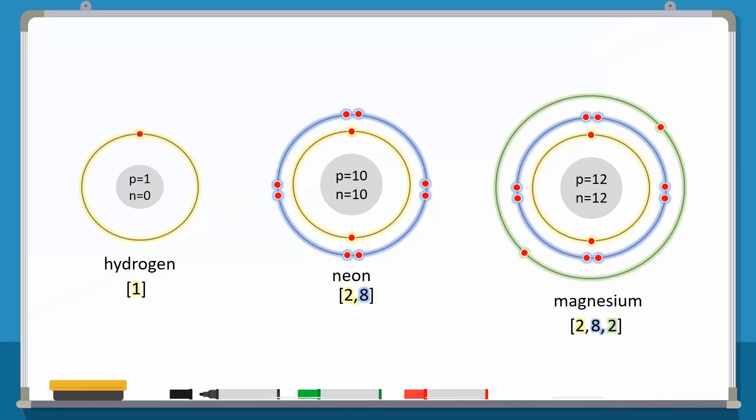This electron is present in the first shell or K shell. Neon has 10 protons and 10 electrons. Using the formula for electronic configuration, the first shell will have 2 electrons and the second shell will have 8. The electronic configuration is written in brackets as 2 comma 8 where the comma separates different shells.